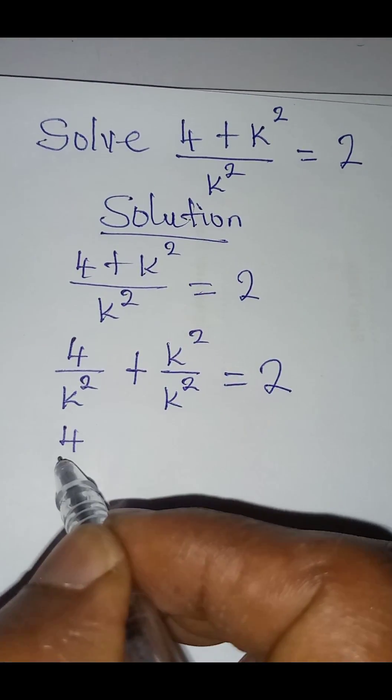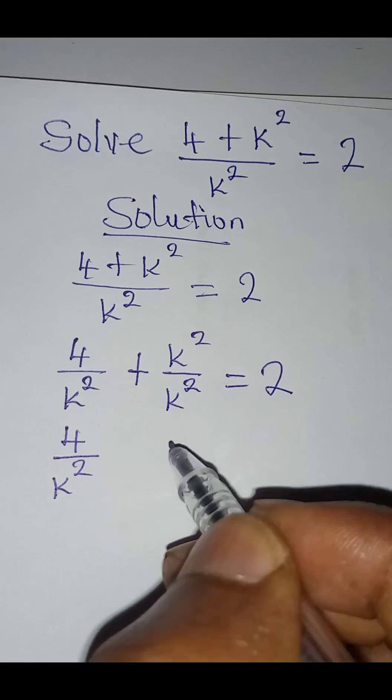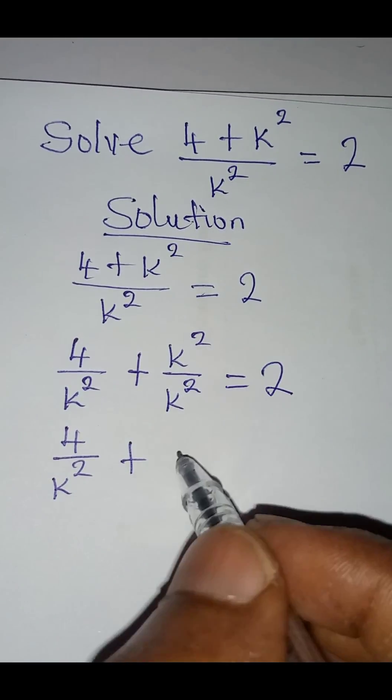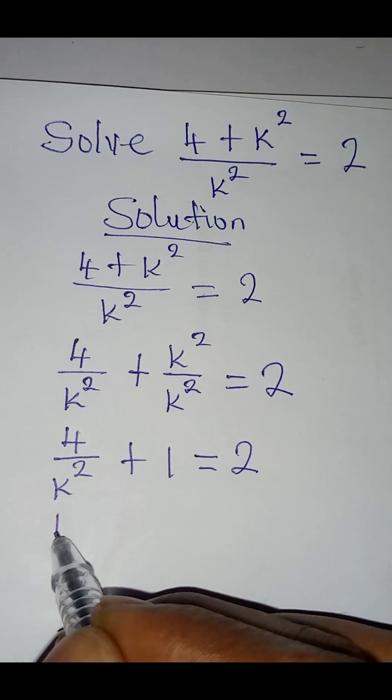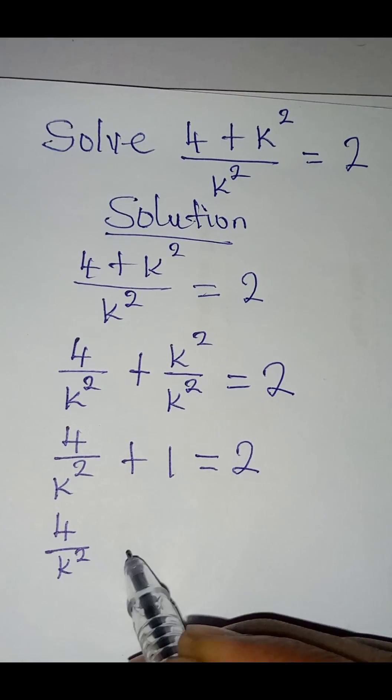Remember this is still coming down: 4 over k squared plus k squared over k squared will now give us 1. This is equal to 2. Now let's collect like terms so that we have 4 over k squared to be equal to 2 minus 1.